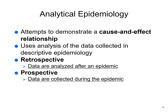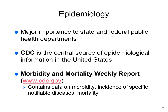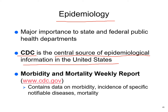Analytic epidemiology looks at cause and effect — retrospective analysis is done after an epidemic; prospective analysis is done during one. Experimental epidemiology involves a hypothesis tested through controlled experiments. The CDC is considered the central source and final word on epidemiological information. They're not always right, but they're more right than anyone else, so it's a good idea to follow their guidelines.